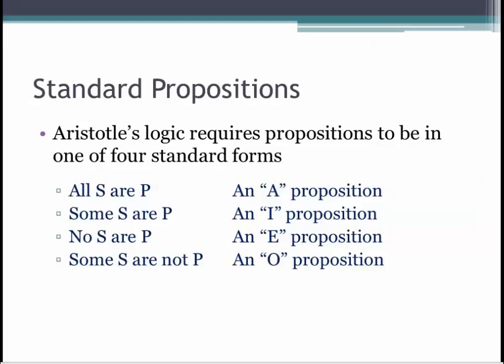A letter abbreviation is used to refer to each of the four types: A, E, I, and O. So when logicians refer to an A claim or an A proposition, they mean a proposition of the form all S are P. When they refer to an I claim, they mean a proposition of the form some S are P. The use of Aristotle's logic will require being familiar with these abbreviations and the characteristics of the propositions they refer to.